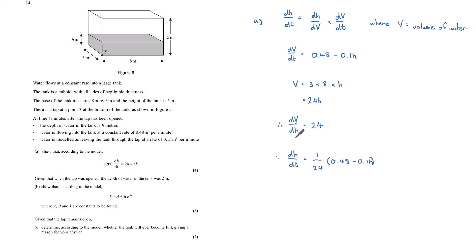dh by dt is dh by dv, which is 1 over my dv by dh. So it's 1 over 24 times dv by dt, which is 0.48 minus 0.1h. Let's tidy this up a bit. If we multiply both sides by 24, then I can say 24dh by dt is equal to 0.48 minus 0.1h, which is almost in the form that I want.